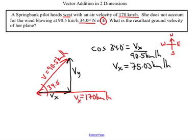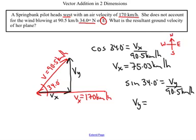Then I'm going to find the y component for this vector. So I'm going to use sine to do that. So sine 34 degrees equals vy over 90.5 kilometers per hour. So when I punch that into my calculator, I come up with 50.61 kilometers per hour. So now I have resolved my vectors that go off at an angle into their x and y components.